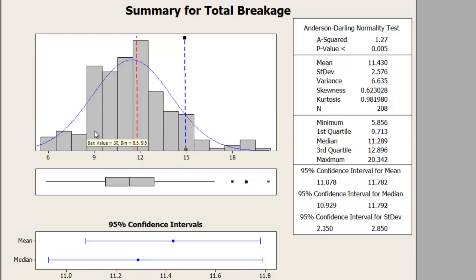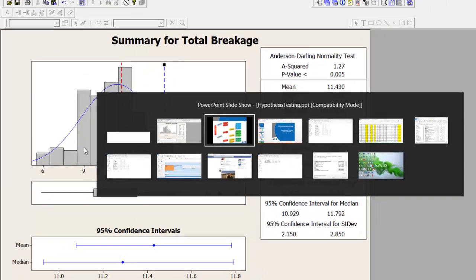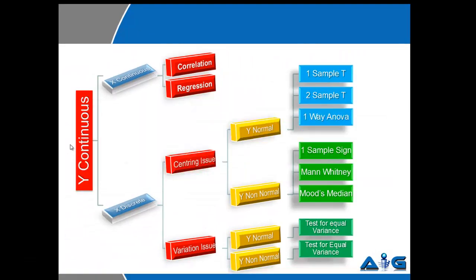I hope the simple explanation helps you. Let's go back. So the first question you will ask is whether you're concerned about central tendency or whether you're concerned about variability. Once you've decided that central tendency is your issue, you will have to check whether your Y is normally distributed or not. You do that using the normality test. Should your Y be normally distributed, you have options of conducting three tests: one sample T, two sample T, and one way ANOVA.